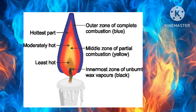In the luminous zone, the wax vapors do not burn completely as the supply of air is inadequate for complete combustion. The wax breaks up into carbon and hydrogen. The unburned carbon particles glow and impart a pale yellow color to the flame. This is the middle part of the flame and is moderately hot.